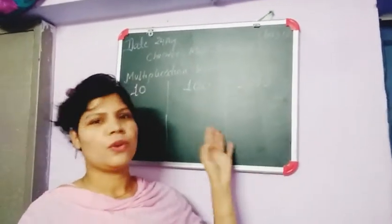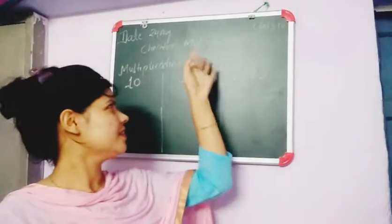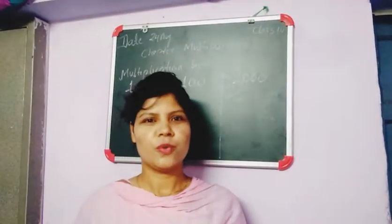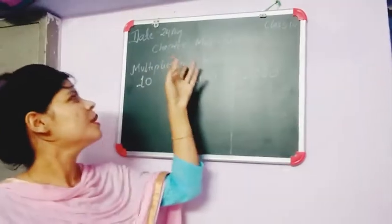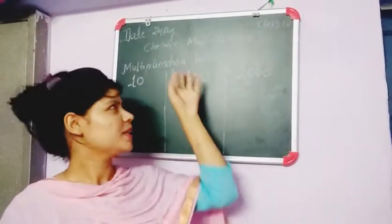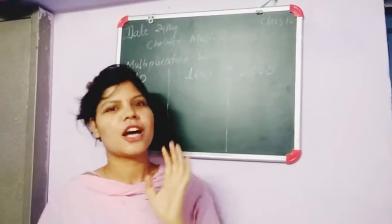We will read one by one exercise. I am taking here exercise 3.1. Here the topic is when a number is multiplied by 10, 100, and 1000.